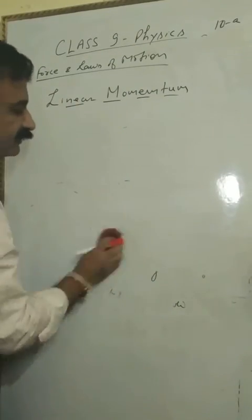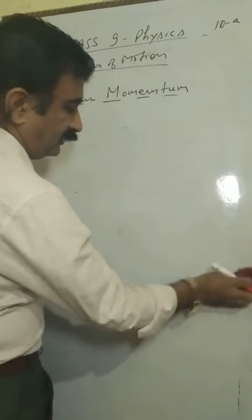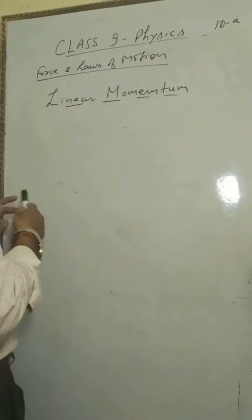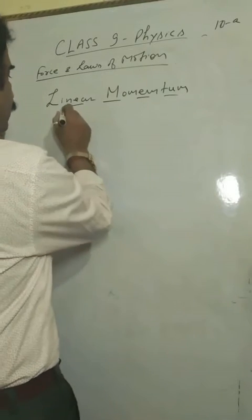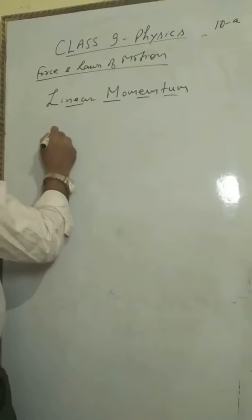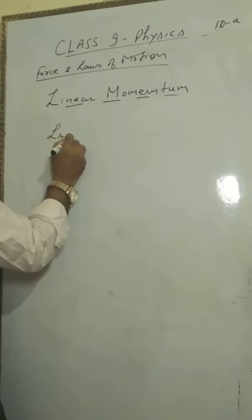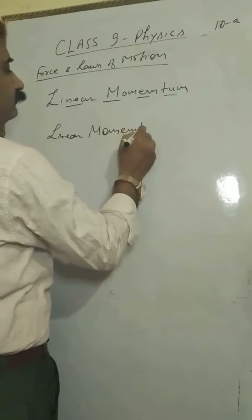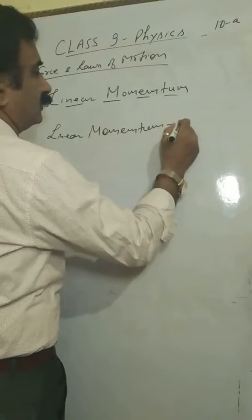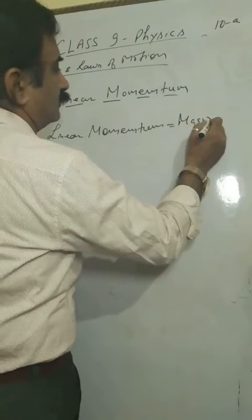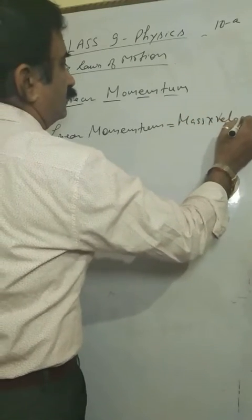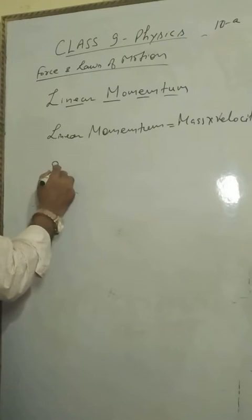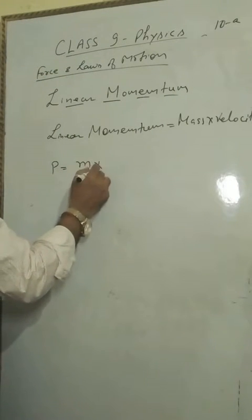So this impact are depending upon the two things. So combining these two things, we generated a new term that is known as linear momentum. And it is equal to mass into velocity. P is equal to M into V. And its symbol is P.